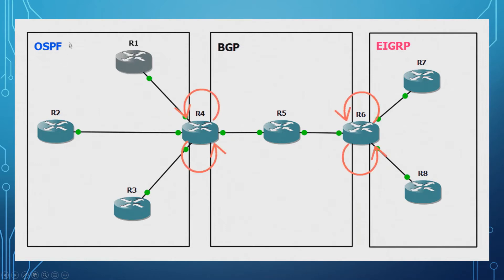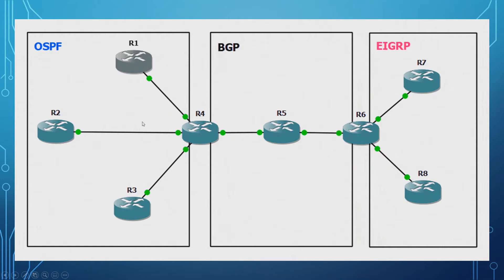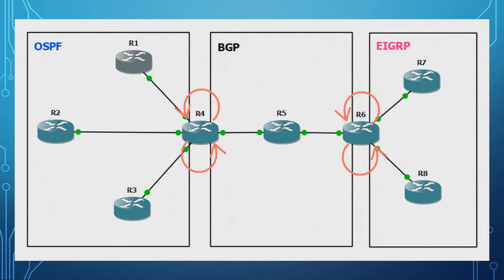So on screen here, we'd be sending OSPF routes into BGP on router 4, and then on router 6 sending BGP routes into EIGRP. We're also going the same way back — EIGRP into BGP and BGP into OSPF. When you're going both ways that's called mutual redistribution, and we'll touch on that a little bit more later.